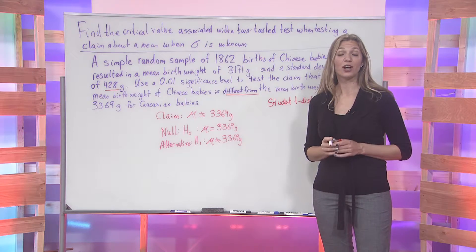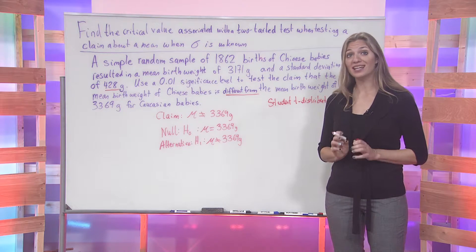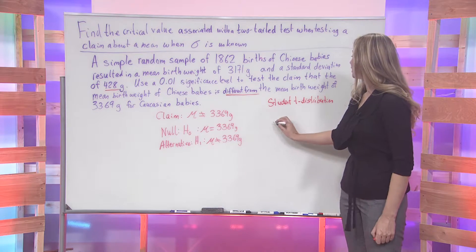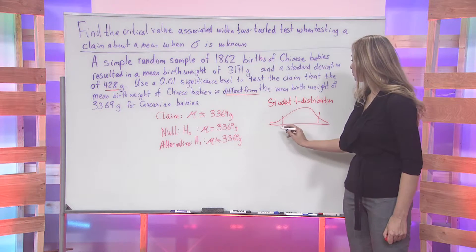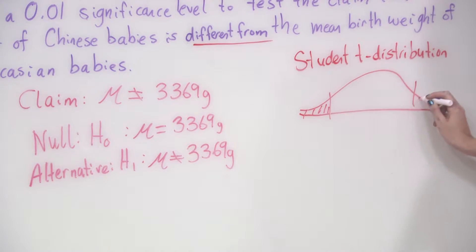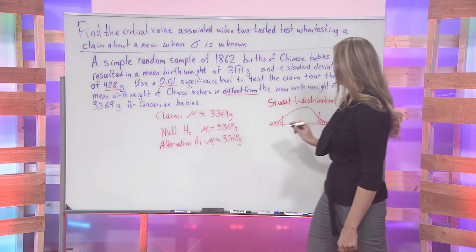So that means for us our critical value is going to be a t-score here, not a z-score. Looking at this graphically, we are going to want to find the two t-scores that encompass a total area under the curve of 0.01, 0.01 being our significance level.